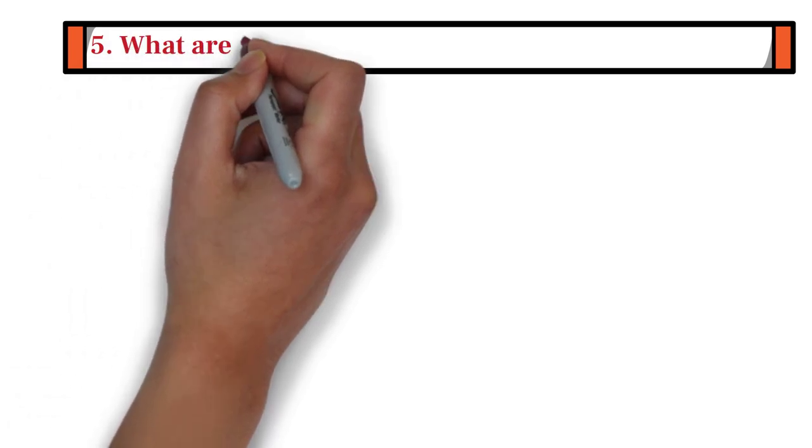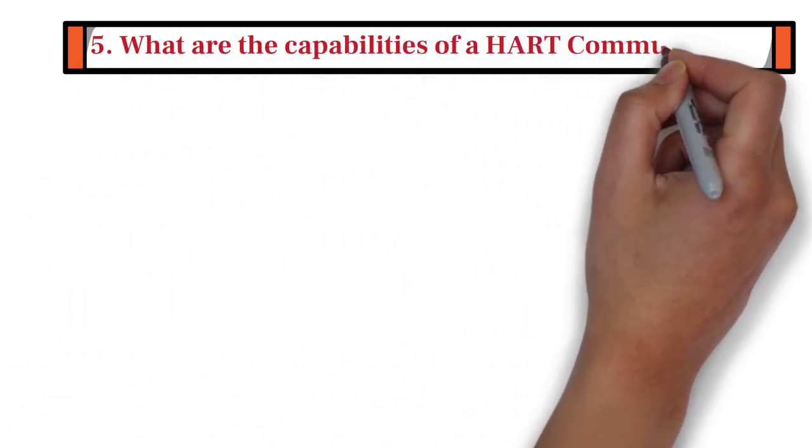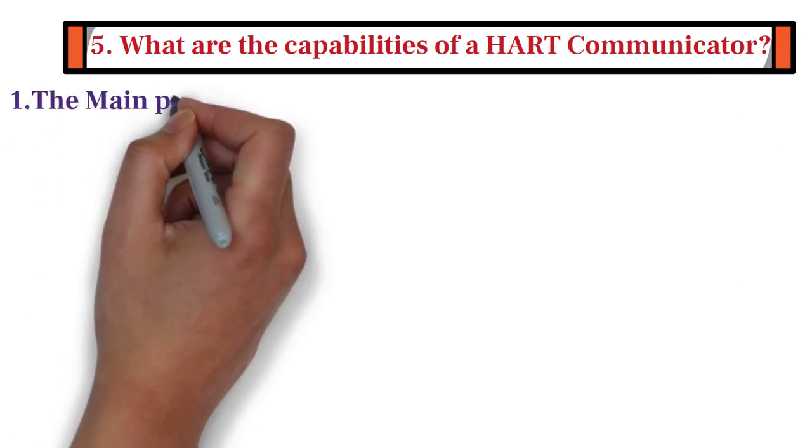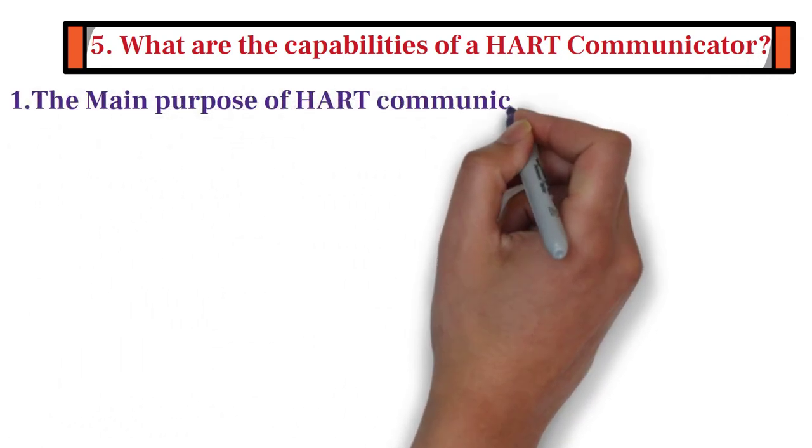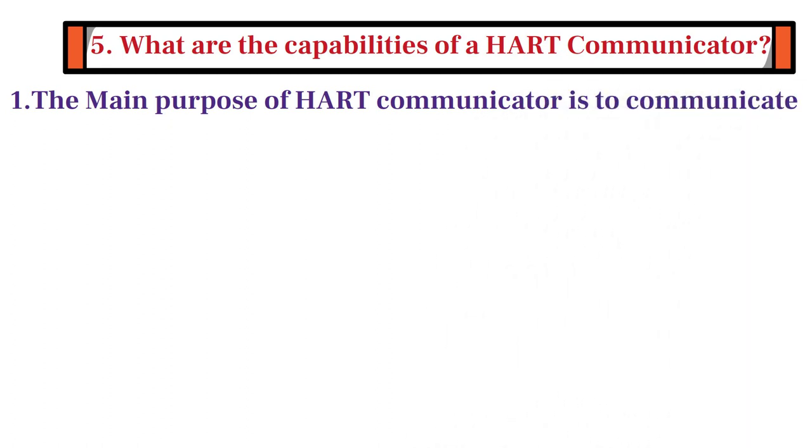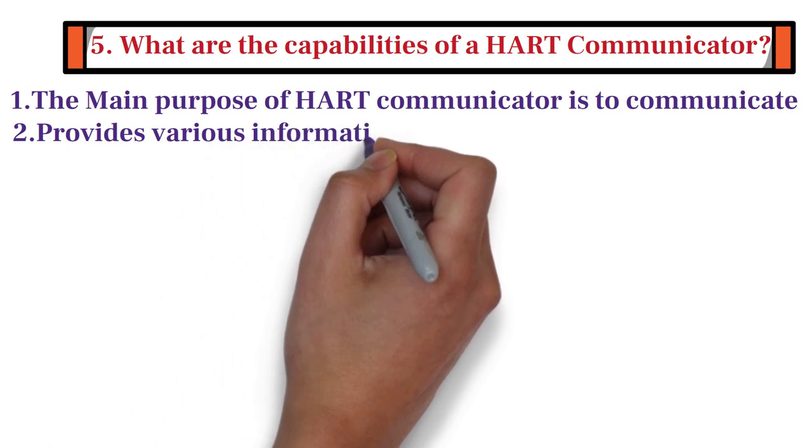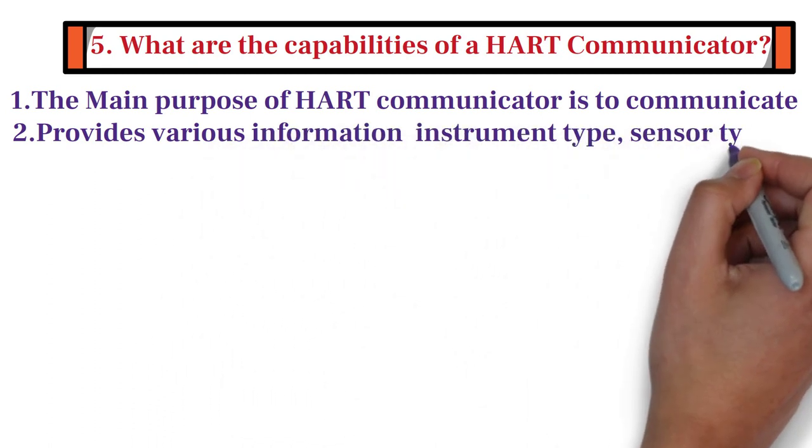The fifth question is, what are the capabilities of a HART communicator? Firstly, the main purpose of HART communicator is to communicate with an instrument that uses the HART protocol. Secondly, it also provides various information such as instrument type, sensor type, model number, etc.